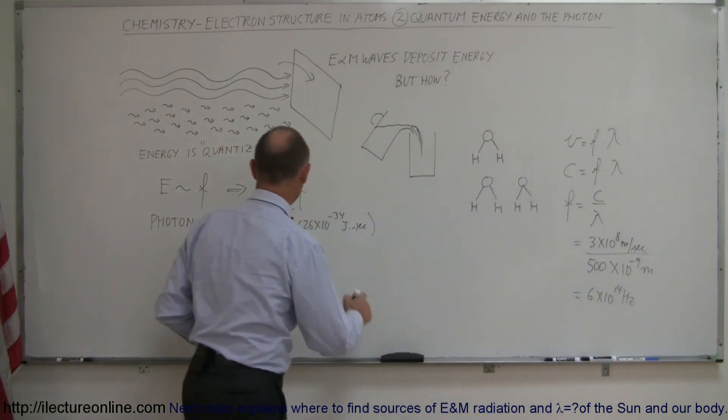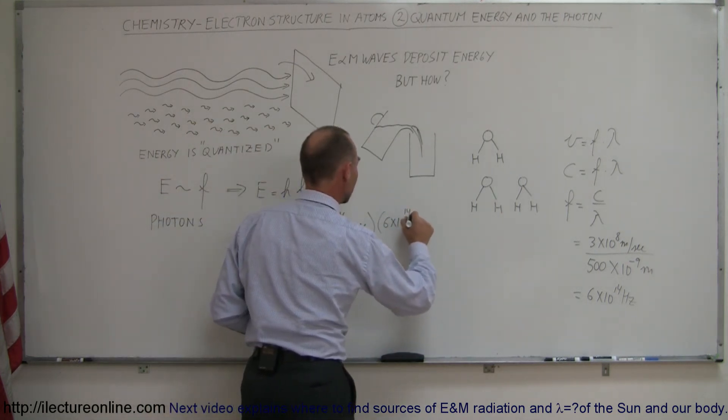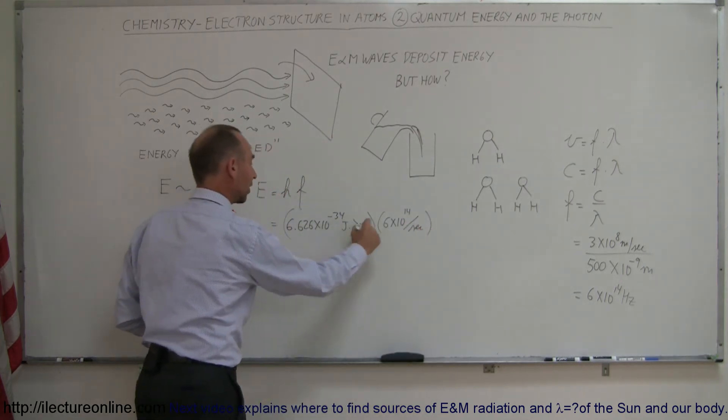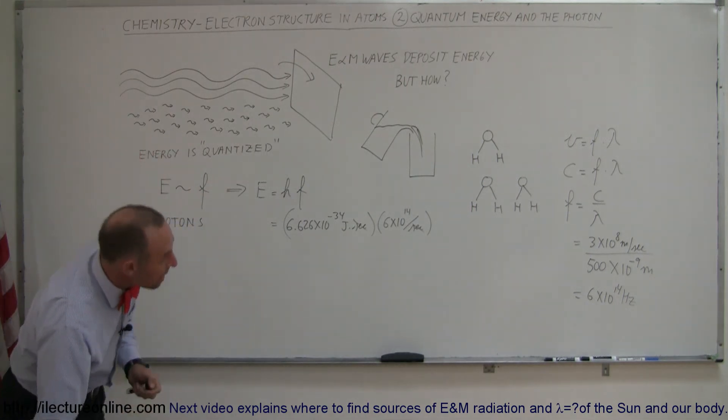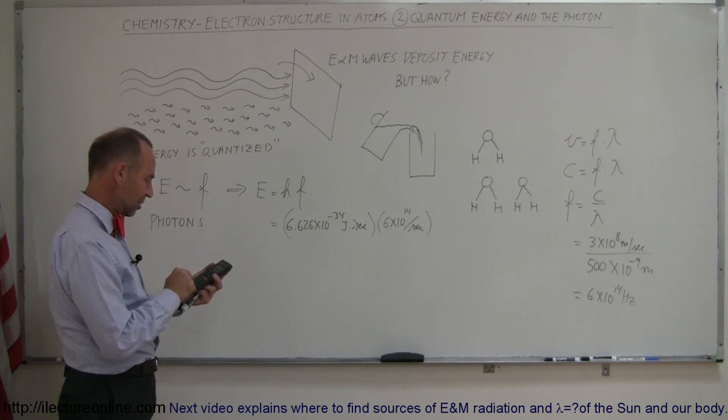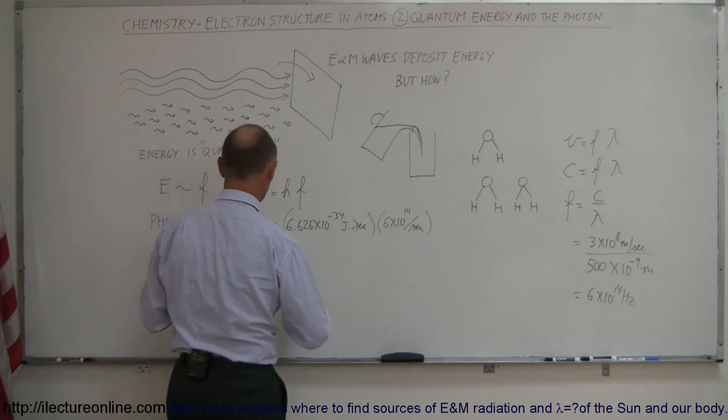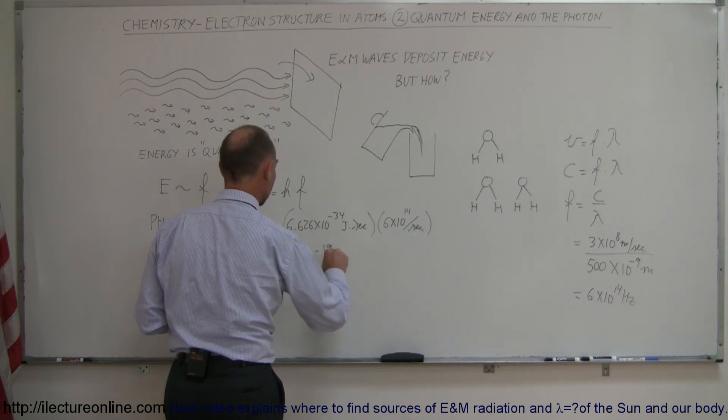So, if we plug that in here for the frequency, we then have 6 times 10 to the 14th hertz, or per second. And we multiply that times, so the seconds cancels per second, and we end up with joules. So that would be the energy contained within a single photon. So we multiply this times 6.626e-34, and we get 4 times 10 to the minus 19 joules. So this is equal to 4 times 10 to the minus 19 joules.